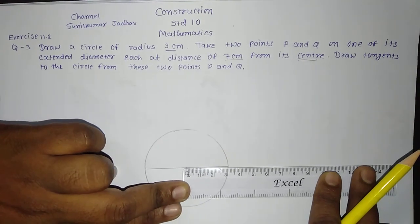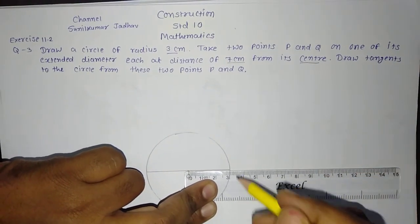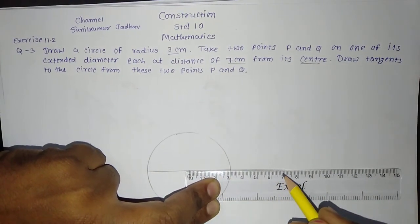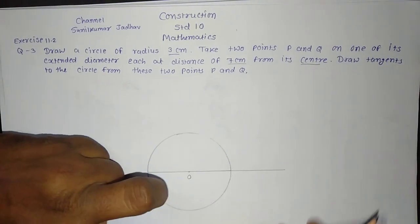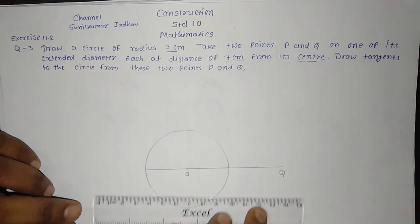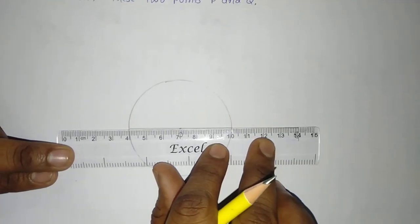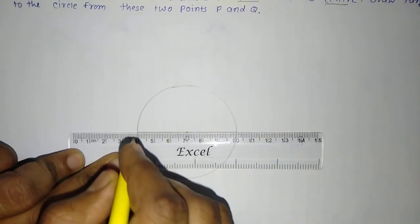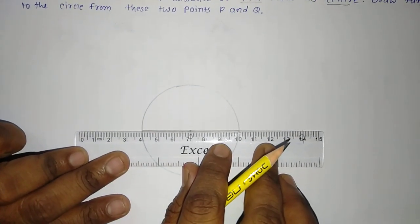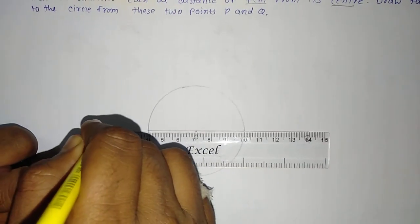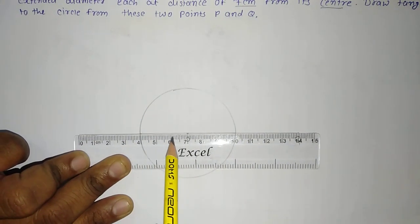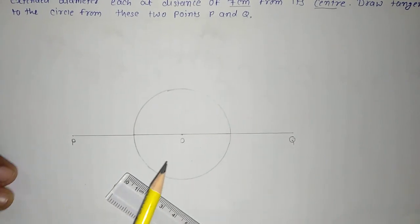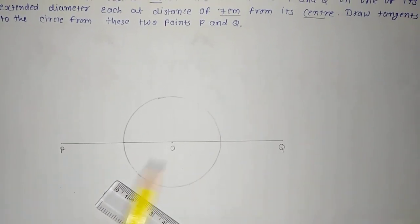I will extend the diameter up to 7 centimeter. You can see this is the center O. I will extend this diameter from the center up to 7 centimeter — it is 7 centimeter. I will give the name of this point Q on one side. On the other side, I will extend from O to 7 centimeter and give that point the name P. So we have taken two points, P and Q, on the extended diameter of the given circle.